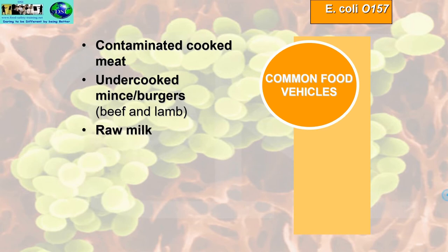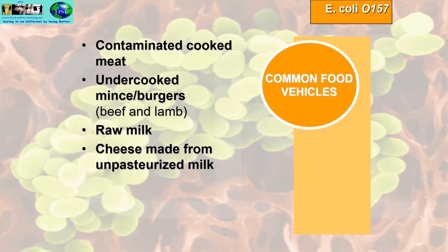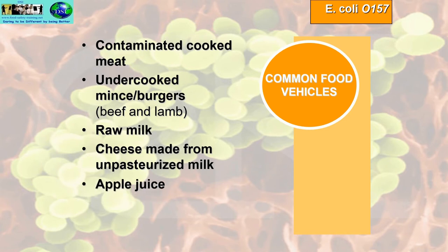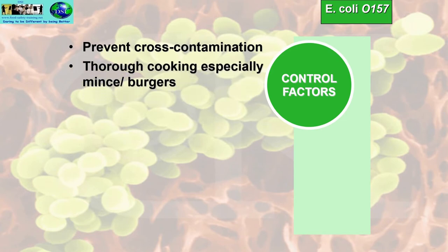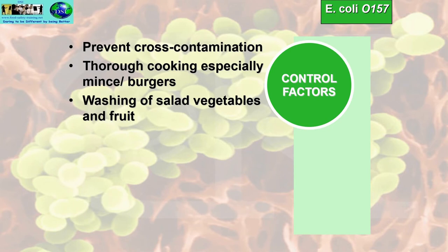Other food vehicles include raw milk, cheese made from unpasteurised milk, apple juice, and salad vegetables. Control factors include preventing cross-contamination, thorough cooking especially of mince and burgers, and washing of salad, vegetables and fruit.